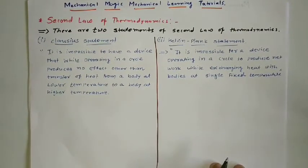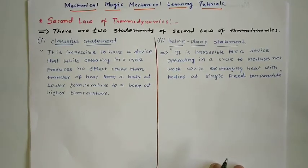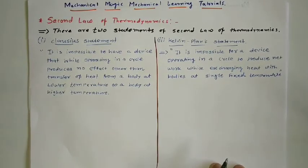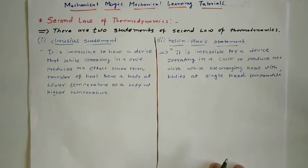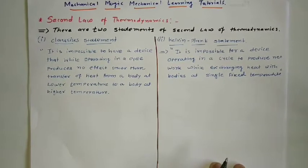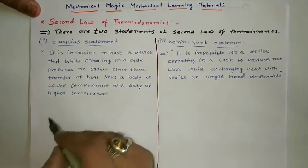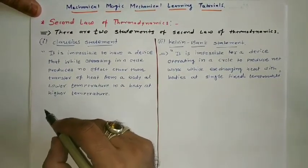Generally, the second law of thermodynamics depends on two statements. The first statement is given by the Clausius statement, and the second statement is given by the Kelvin-Planck statement. So let us see what is said for the first case, the Clausius statement.